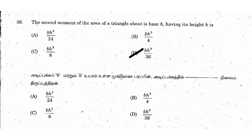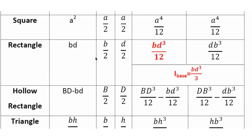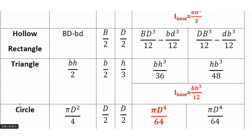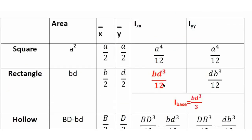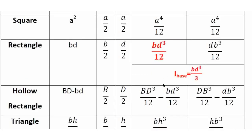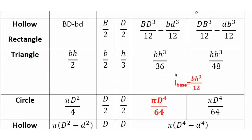The second moment of area of a triangle above its base with height h. The moment of inertia formula for a triangle: about the Ixx (centroidal) axis it is bh³/36; about the Iyy axis it is hb³/48; and about the base it is bh³/12. Various cross-section moment of inertia formulas exist for square, rectangle, hollow rectangle, and circular sections (πd⁴/64 for xx and yy axes), as well as semicircle and quadrant.